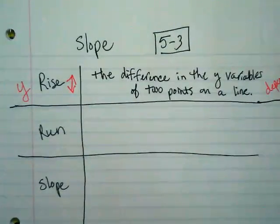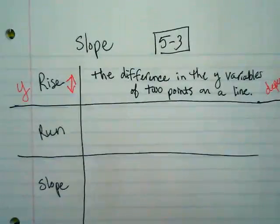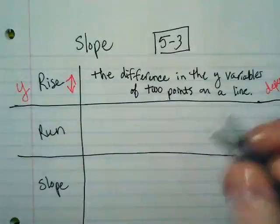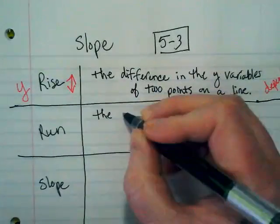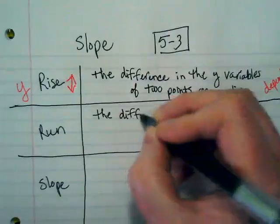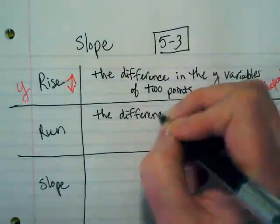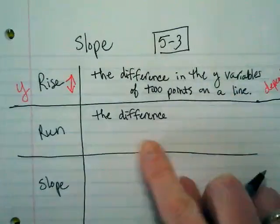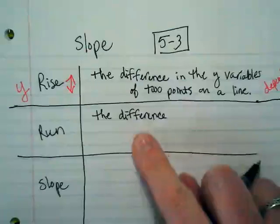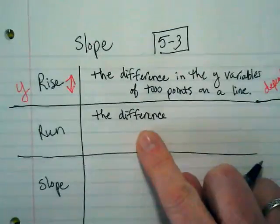All of those things we've talked about with x and y, domain and range, they're all still here. We're just putting them on a graph and using their relationship with each other. Run is the only difference in this definition - I'm going to change y to x. But when I say difference in the definition, the word difference means subtraction.